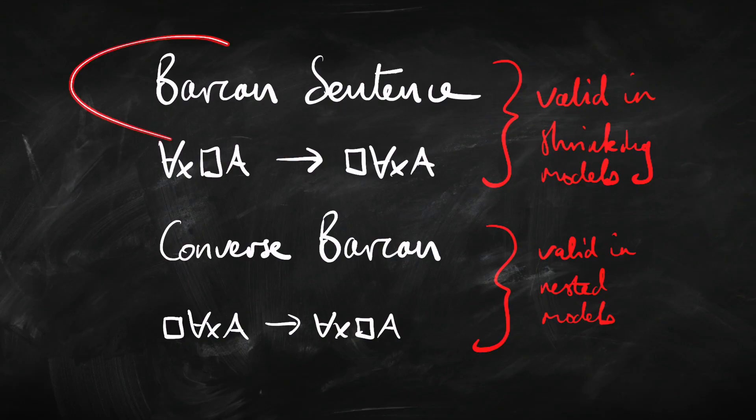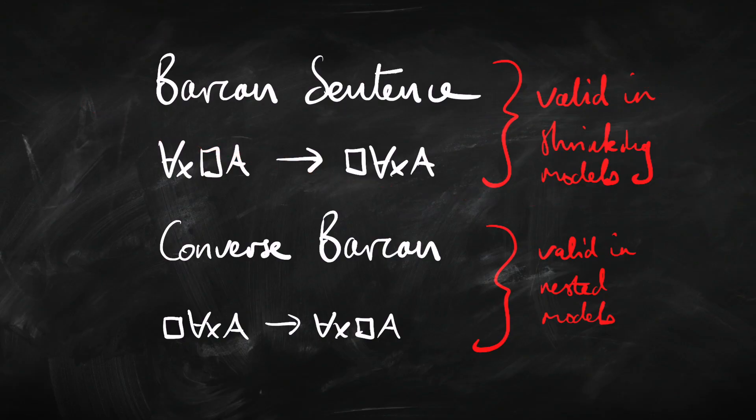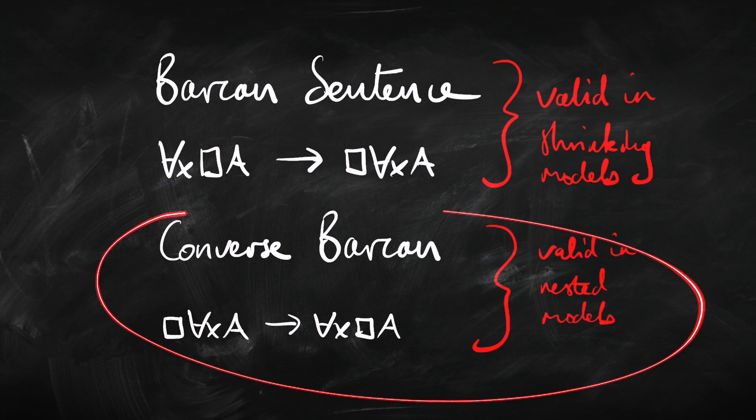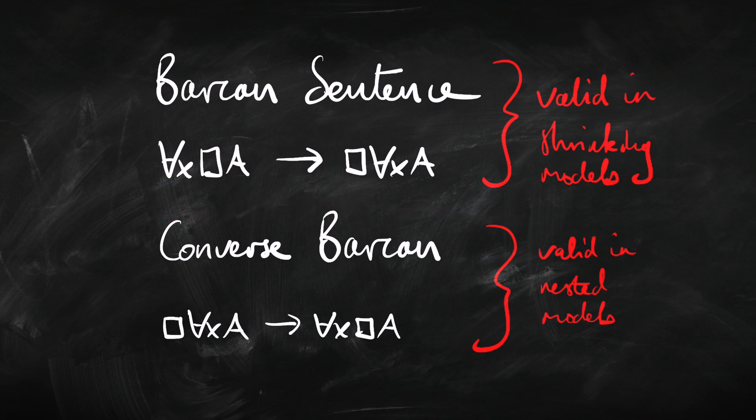So the takeaway message: the Barker sentence is valid in shrinking models but not valid in nested models. The converse Barker sentence is valid in nested models but not valid in shrinking models. Both are valid in constant domain semantics. But when we're looking at all of the variable domain models, neither of those sentences are going to be valid.